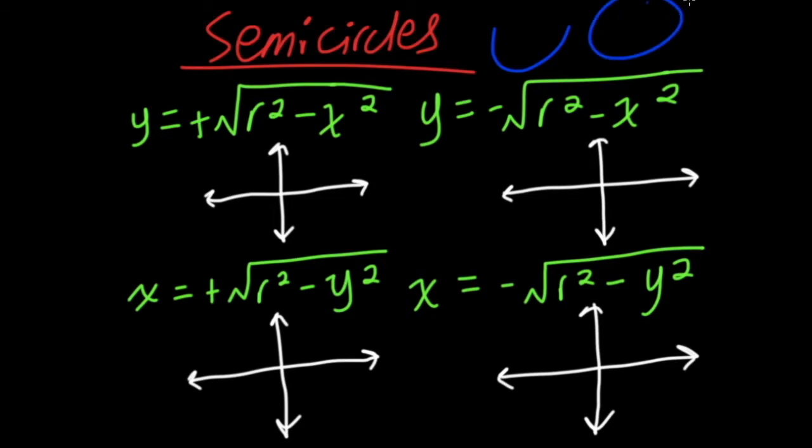A semi-circle goes all the way around. And a semi-circle can be the bottom half of a circle, it could be the top half, or one of the sides.